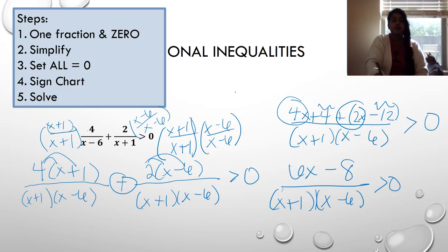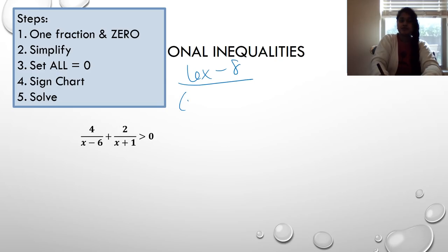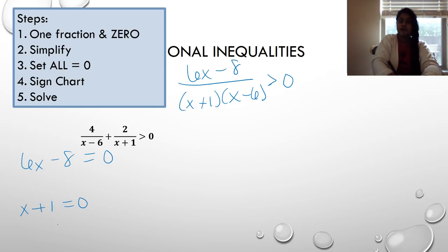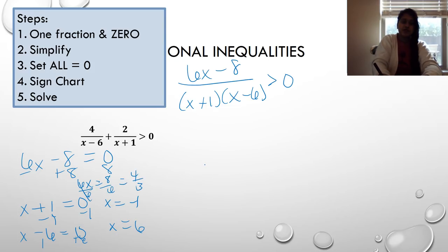Combining like terms gives us 6x − 8 over (x+1)(x−6), which is greater than 0. Step one and step two are done. Now I set all parts equal to zero: the denominator gives x = −1 and x = 6. The numerator 6x − 8 = 0 gives 6x = 8, so x = 4/3. Now I have 4/3, −1, and 6 — ready for the sign chart.